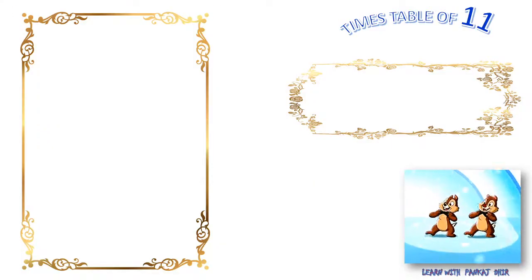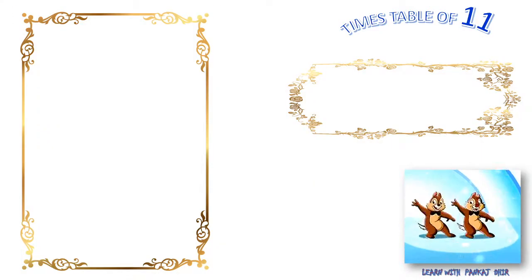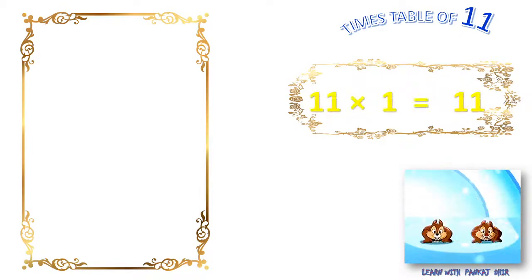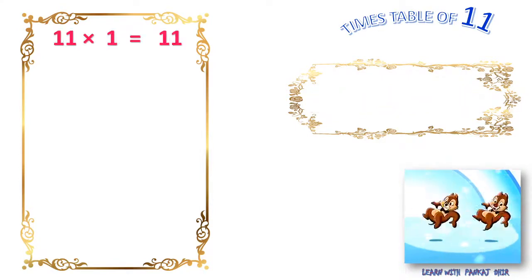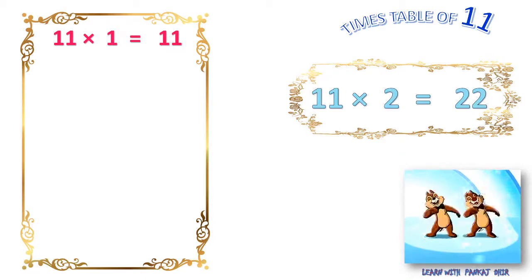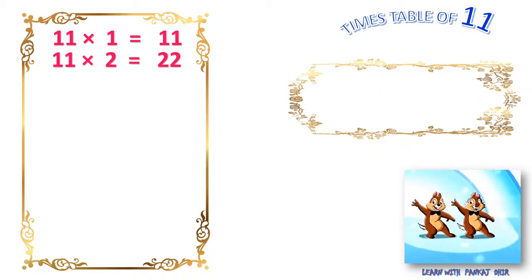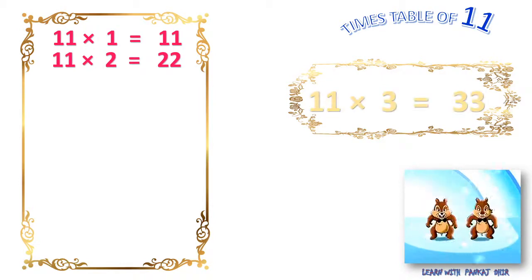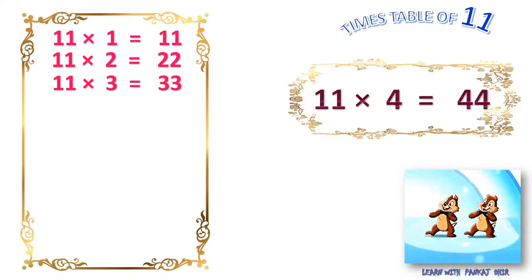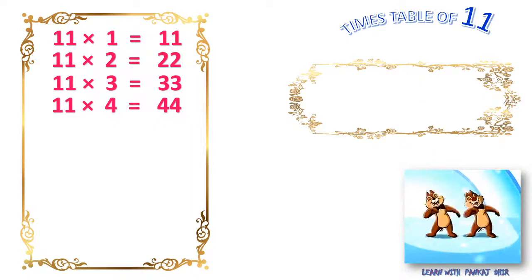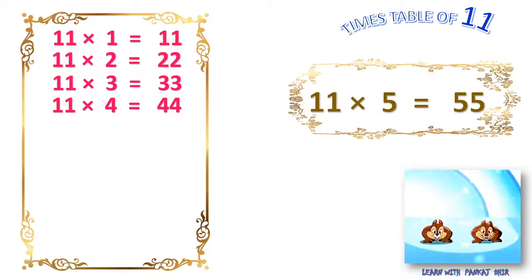One more time, times table of 11. 11 ones are 11. 11 twos are 22. 11 threes are 33. 11 fours are 44. 11 fives are 55.